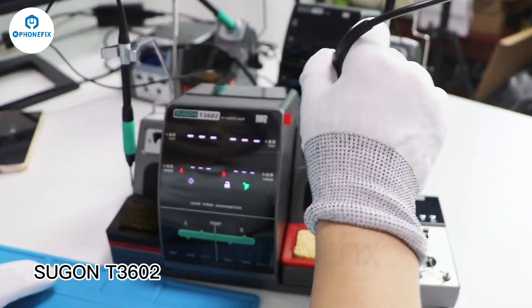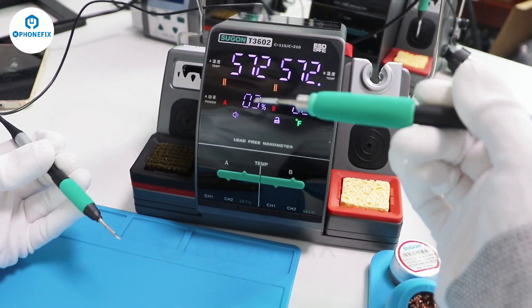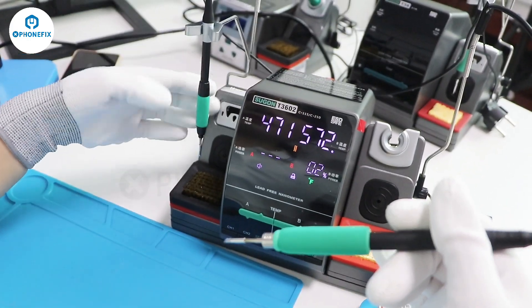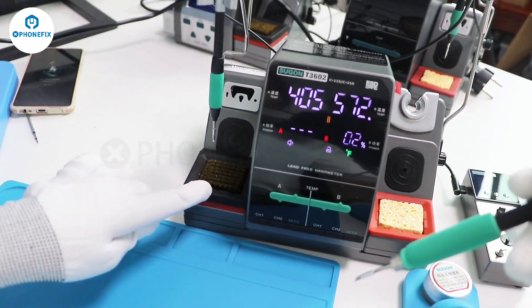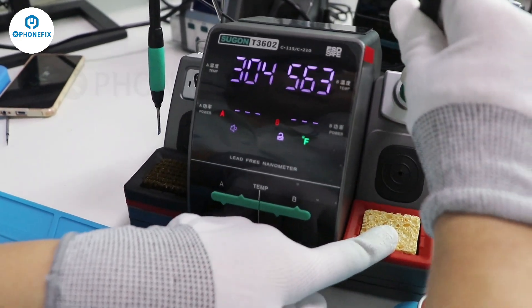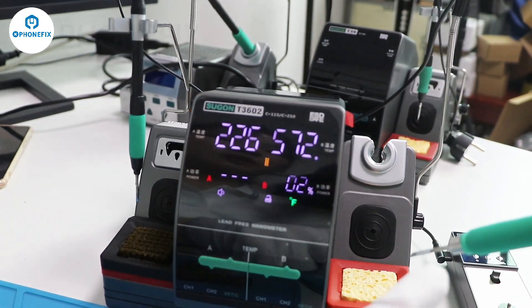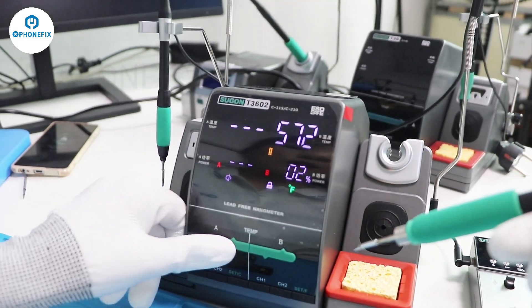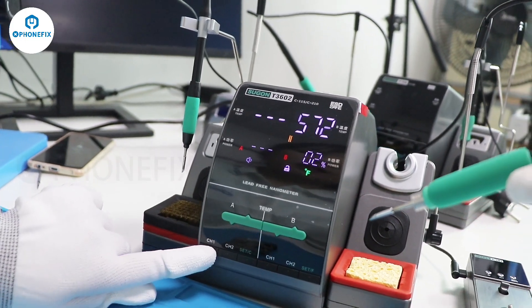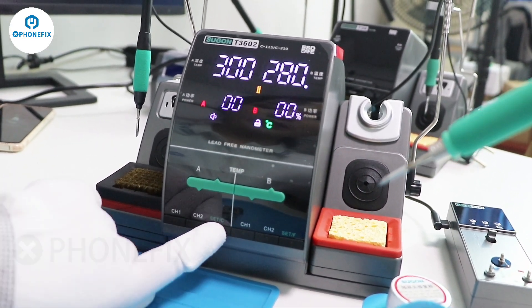Now here is the Sugon T3602. It has two channels and two handles. The left is the C115 and the right is the C210. It also has two holders. The left and the right. It can be used to replace the solder tip and clean your solder tip. This is a brush and this part is a sponge. Here is the power and real-time temperature and the right is the C210 real-time temperature and its power. The left dial is for the left and the right dial is for the right. It has two channels for the left and the right. You can also change the temperature unit here.